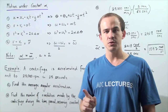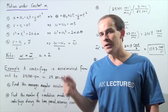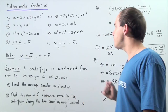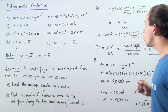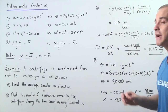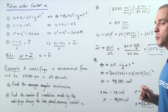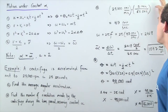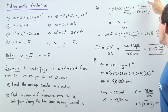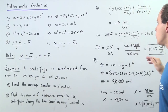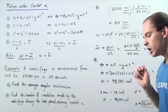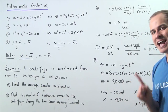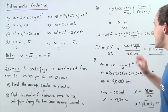We take our quantity of 25,000 revolutions per minute and multiply by one minute divided by 60 seconds. The minutes cancel and we're left with approximately 417 revolutions per second as our frequency.